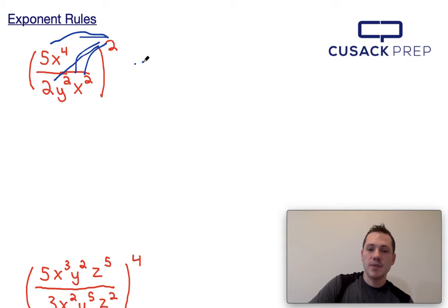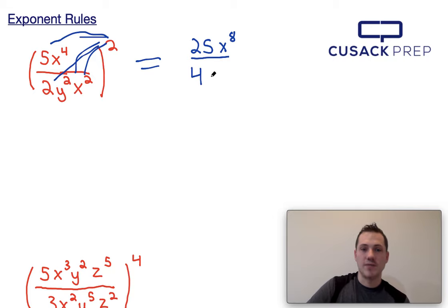So distributing two in, we would end up with 5 squared, which is 25, times x to the fourth times 2, which is x to the eighth. 2 squared is going to give us 4, y squared squared is going to give us y to the fourth, and x squared squared is going to give us x to the fourth.